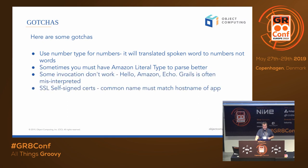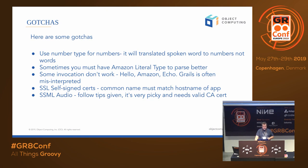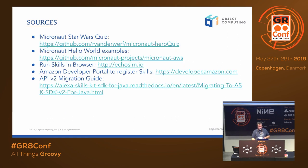A couple of gotchas: number types for numbers — make sure you do that, otherwise you'll get numbers coming back spelled out like O-N-E. There's an actual type you need for numbers. Sometimes you can use a literal type to parse better. Some notification words don't work — you can't say 'hello Amazon Echo' or any of the reserved things. 'Grails' doesn't seem to interpret very well either. And again, SSL self-signed certs are only for dev mode and the common name must match the hostname, or you'll get a weird error you'll spend hours trying to figure out.